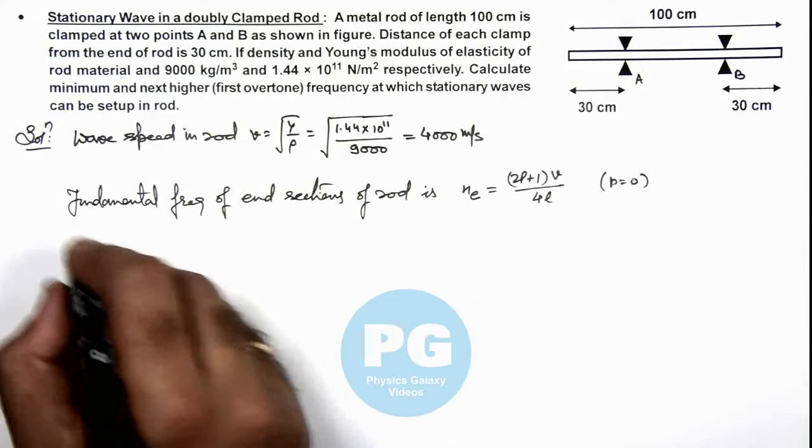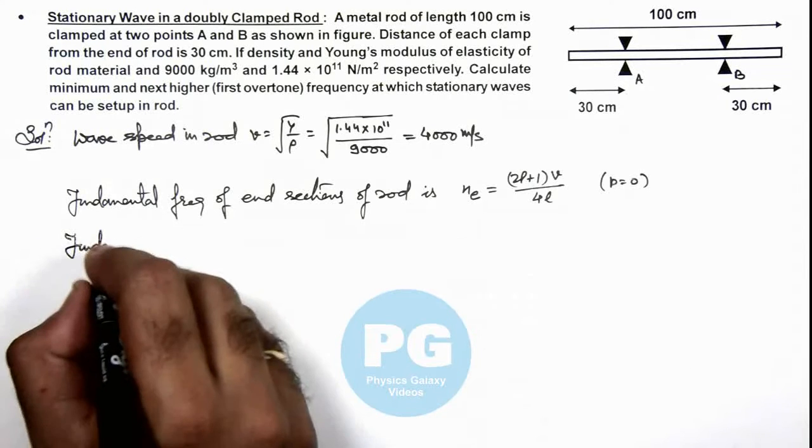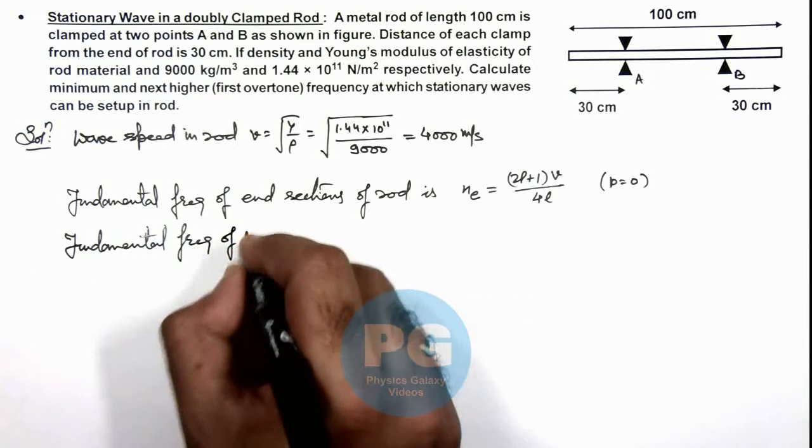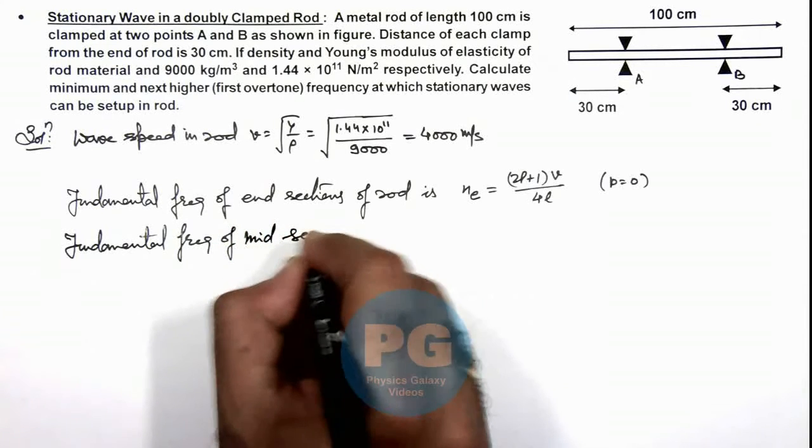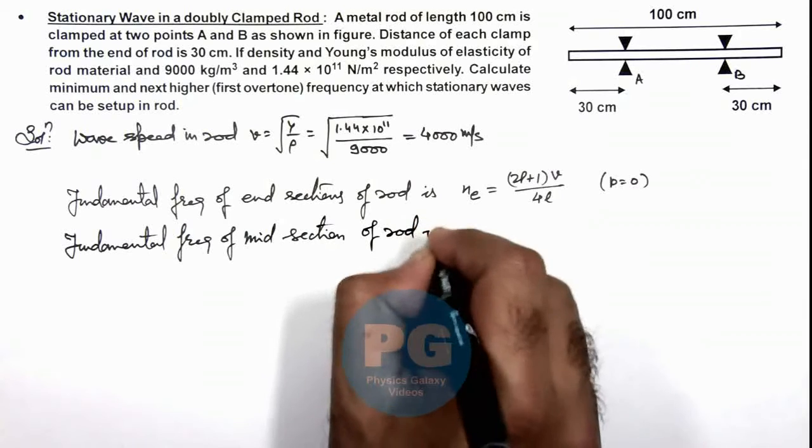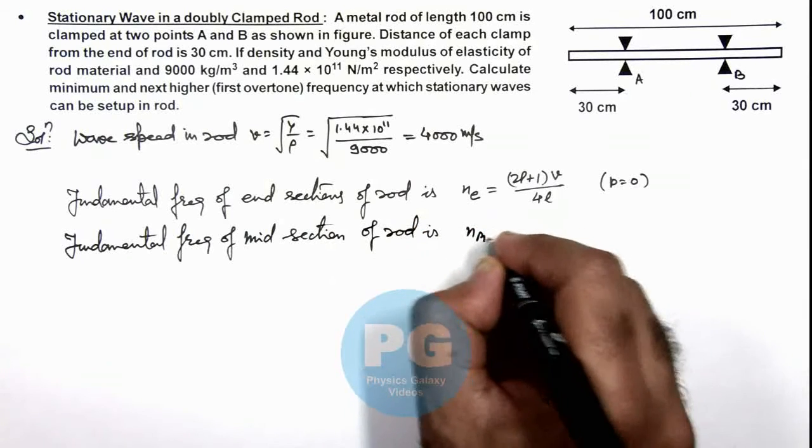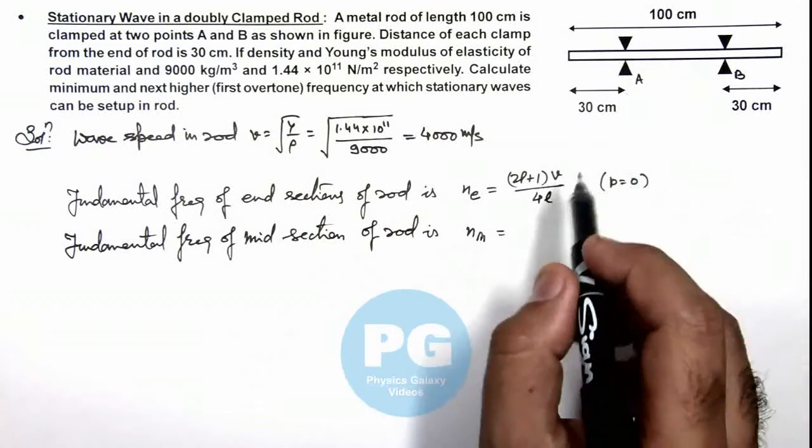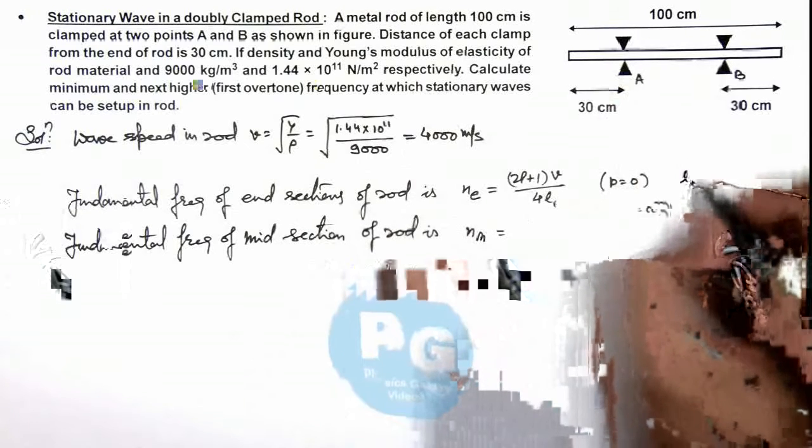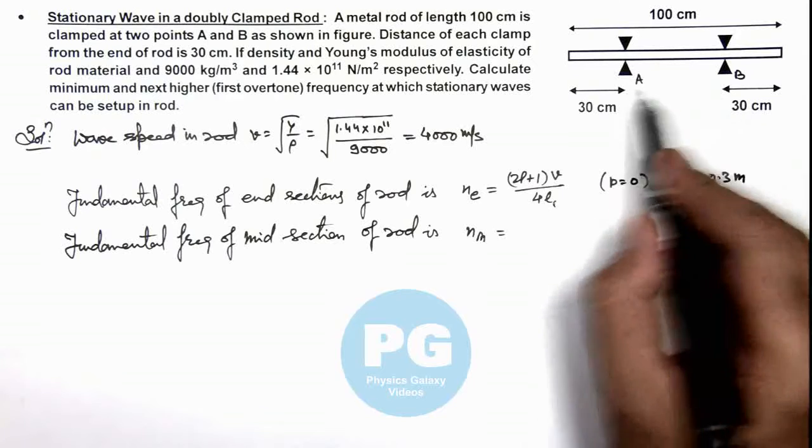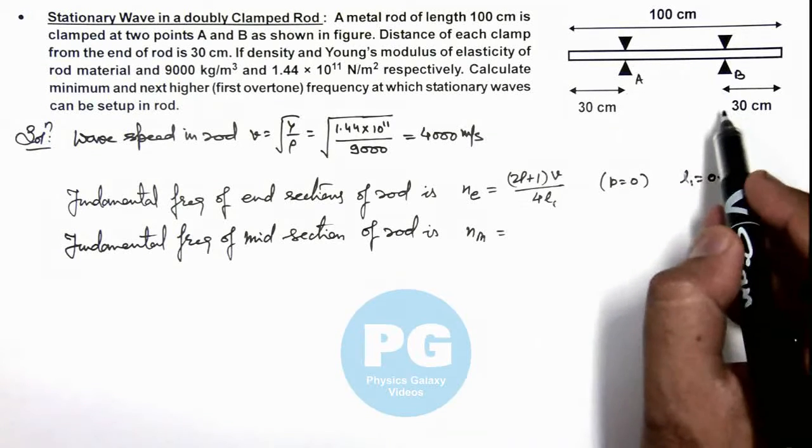Similarly we can calculate the fundamental frequency of mid section of rod. This can be written as n_m, and the value can be simply written as v / 2L_2. If this section is taken as L_1, here L_1 is 0.3 meter. This section we consider as L_2, which is 0.4 meter.